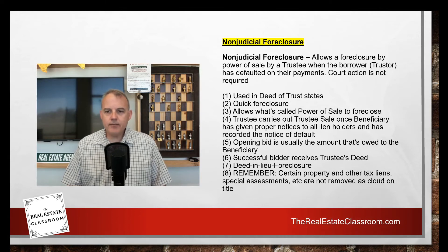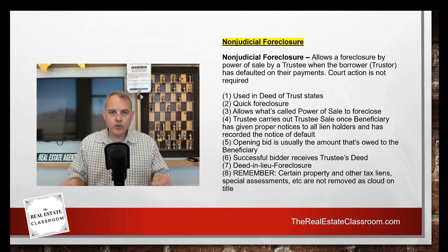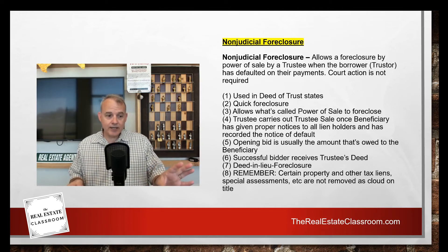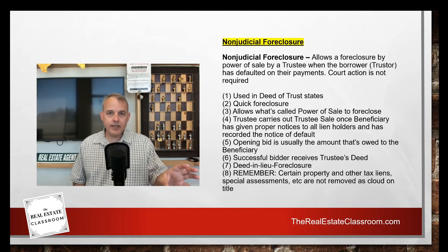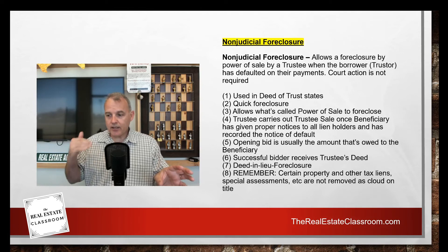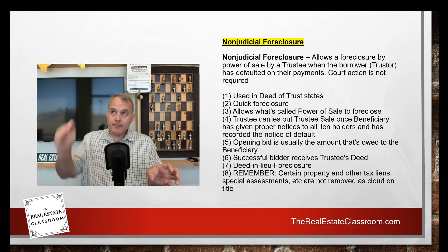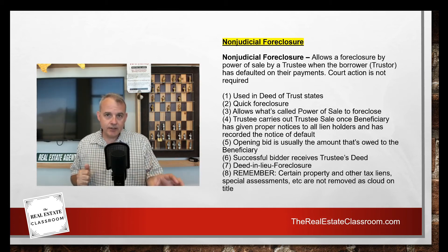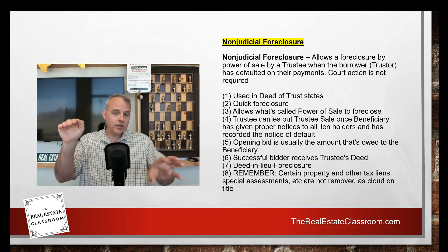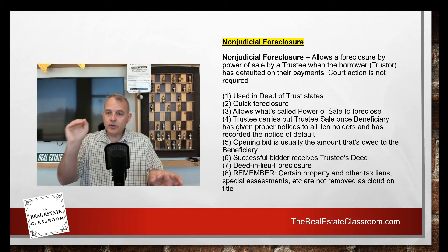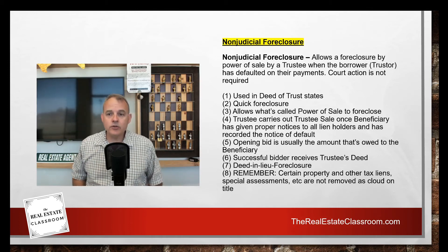Number five: the opening bid is usually the amount owed to the beneficiary. The trustee shows up at the courthouse stairs and opens with, say, $105,000 — what they're owed. Anyone can bid at the sale. If the property is valued at $200,000 and the final sale is $150,000, the trustee collects their $105,000 and the successful bidder owns a property worth $200,000 having paid only $150,000. That's how trustee sales work.